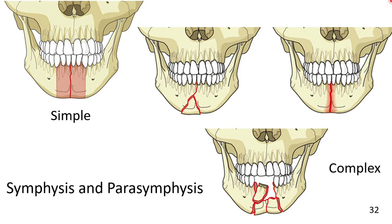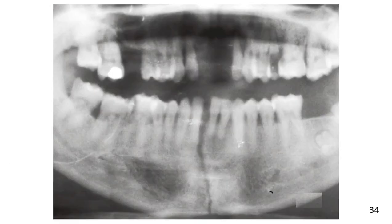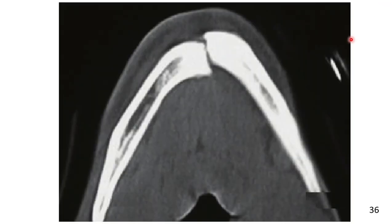Symphysis and parasymphysis fractures may be simple as well as complex. Here you can see the simple symphysial fracture shown in this diagram. An orthopantomogram of a simple symphysial fracture is shown, and this image shows a PA view of the same patient.